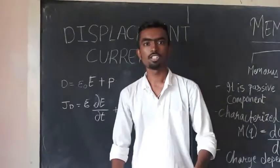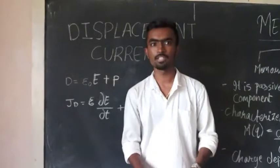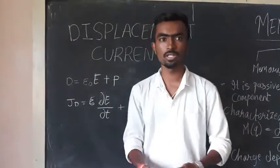In electromagnetism, displacement current is the quantity appearing in Maxwell's equations that is defined in terms of the rate of change of the electric displacement field.